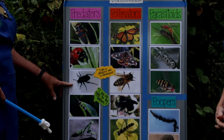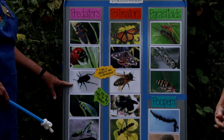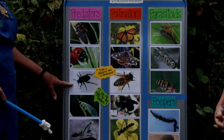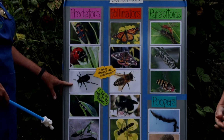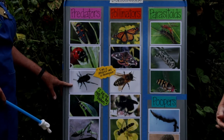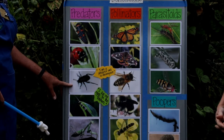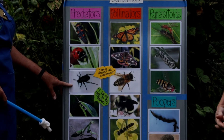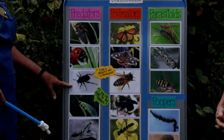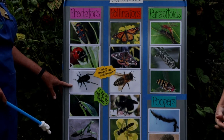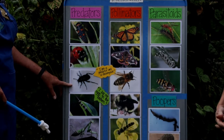Here we have a ground beetle. Some insects in the garden do more than one job. Ground beetles are both a predator, coming out at night and eating harmful insects, and they also decompose those same insects and plant matter that they consume.